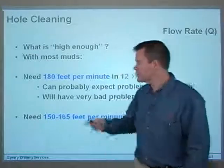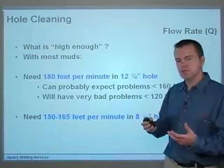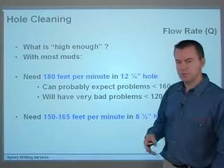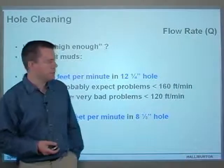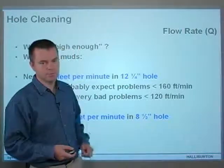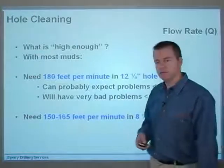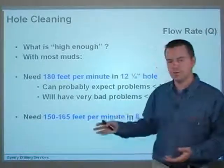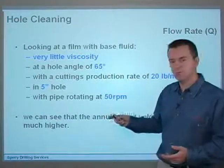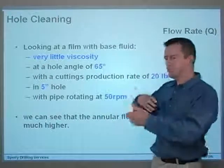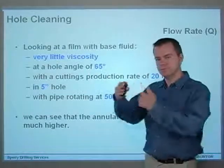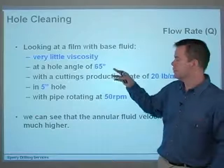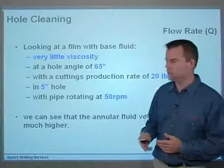What is high enough? With most muds — fluids with viscocifiers and weighting material added — we need about 180 feet per minute in a 12¼-inch hole. We can probably expect problems if it's less than 160 feet per minute annular velocity, and we will almost certainly have bad problems at less than 120 feet per minute. In an 8½-inch hole, we need somewhere between 150 and 165 feet per minute. These are rules of thumb, and they apply with mud. We'll now look at a film of cuttings being moved up the wellbore using a base fluid, which is much clearer and easier to see cuttings in.